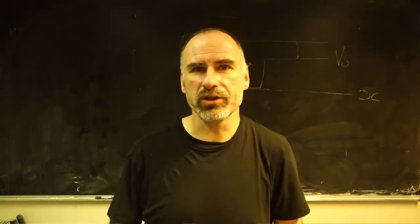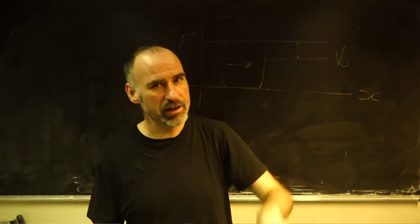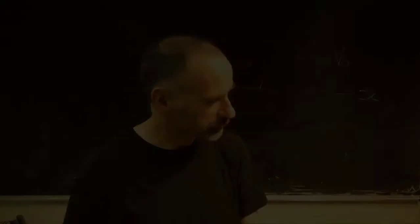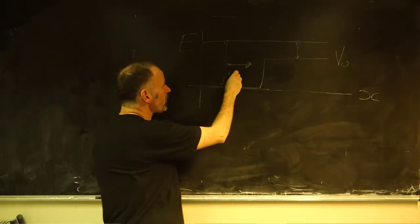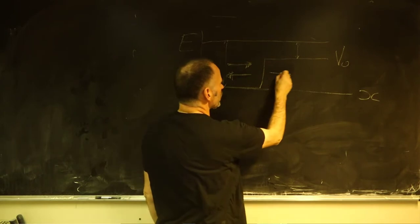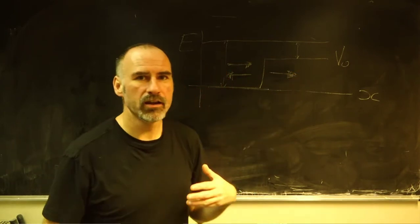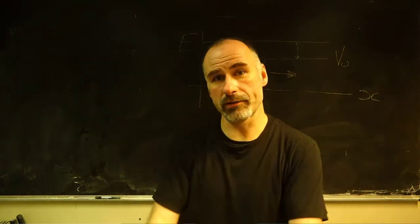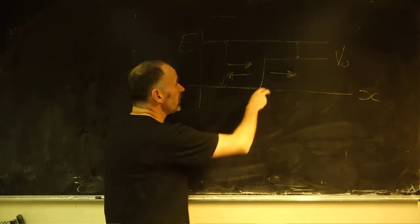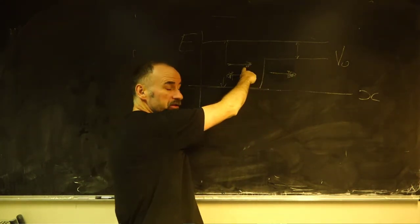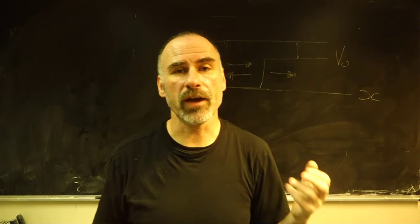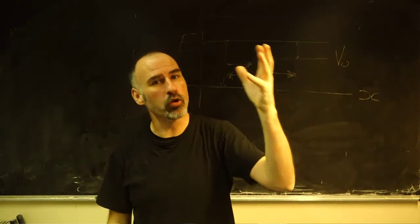We're going to look at that in mathematical detail. I'm going to give you the steps, but you're going to do the algebra — you'll learn a lot more that way. So we've got a beam of particles going in; some of that beam, quantum mechanically, is going to be reflected, and some is going to be transmitted. We're going to spend time deriving what are called the transmission and reflection coefficients.